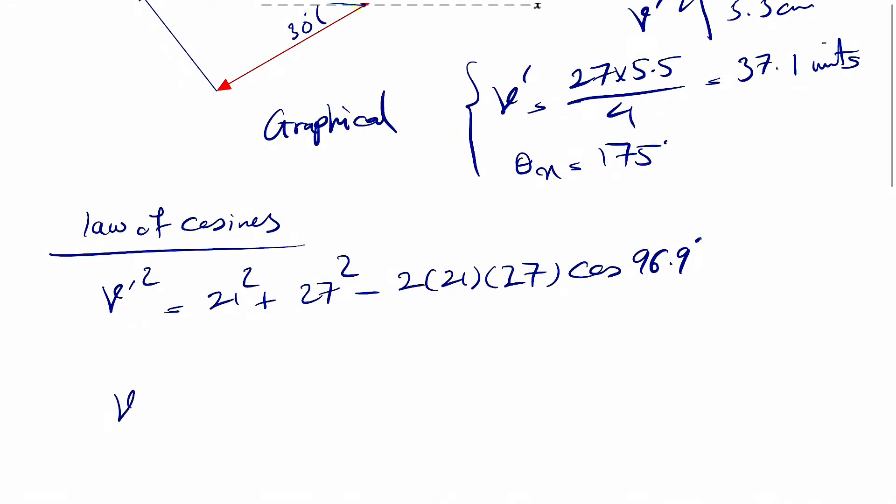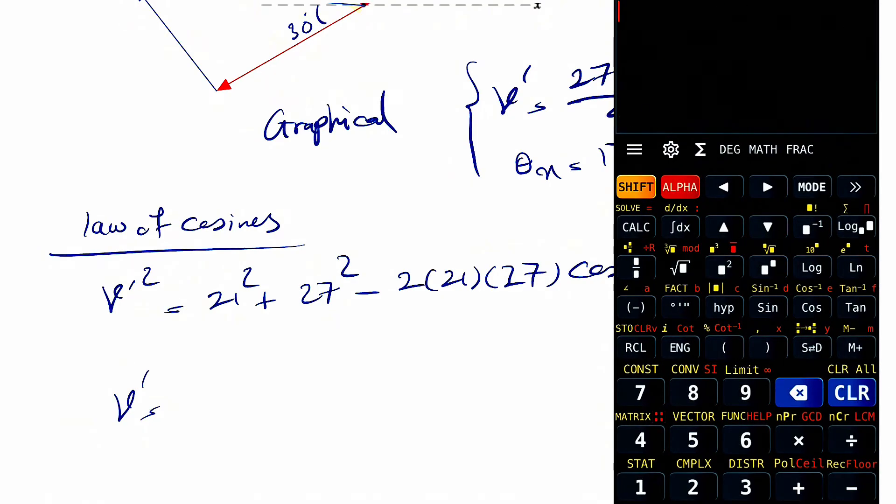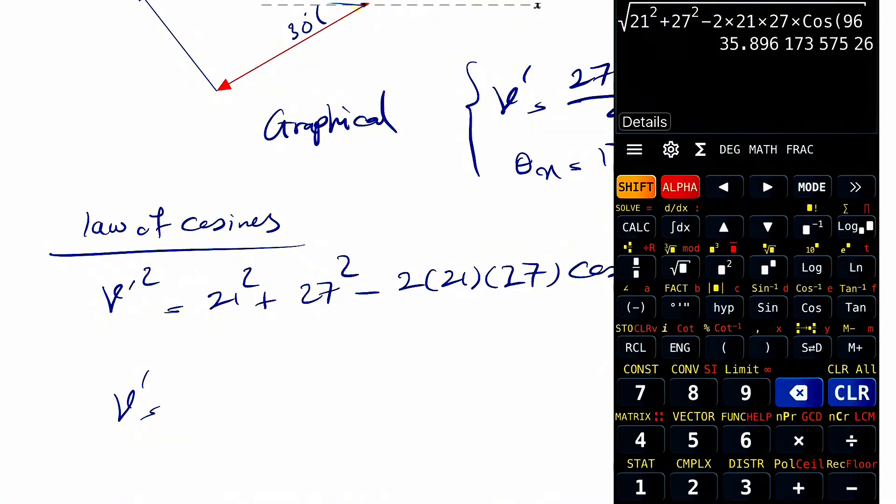So this is going to be 36.9. So this is going to be 36.4 times cosine of 96.9. So this is going to be 36.14 units.